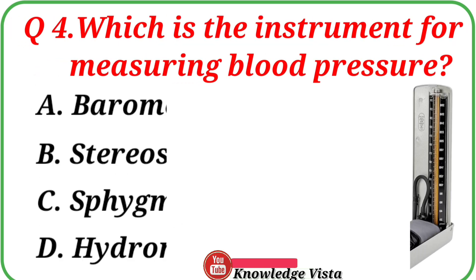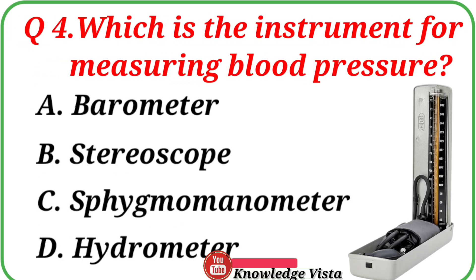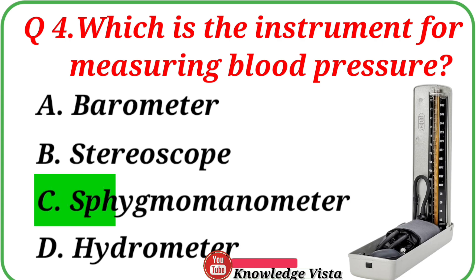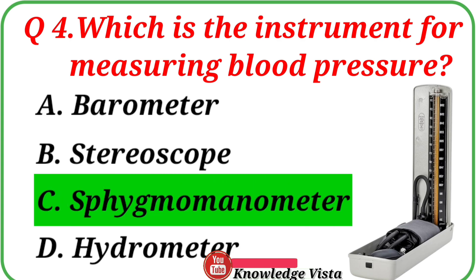Question No. 4: Which is the instrument for measuring blood pressure? Your options are: A. Barometer, B. Stereoscope, C. Sphygmomanometer, D. Hydrometer. Correct answer is Option C, Sphygmomanometer.